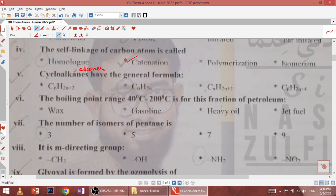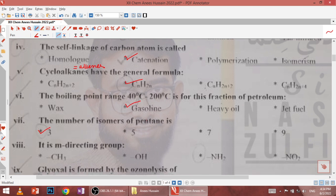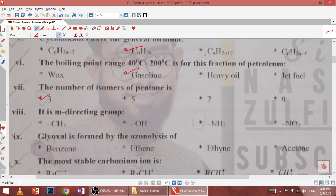The formula is CNH2N. Sixth, the boiling point range 40 degrees to 200 degrees for this fraction of petroleum is gasoline. Seventh, the number of isomers of pentane is 3: n-pentane, iso-pentane and neo-pentane. Eighth, the meta-directing group is NO2, nitro group, which is the correct answer.